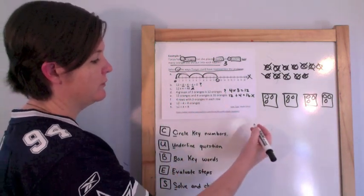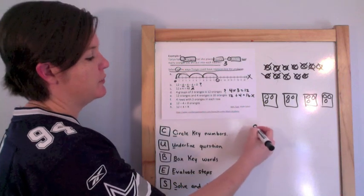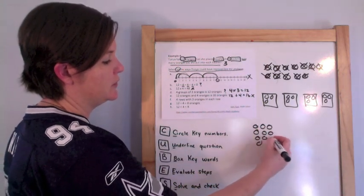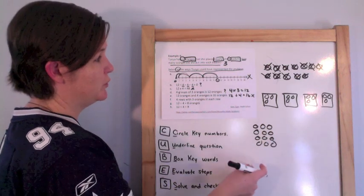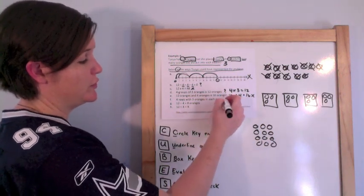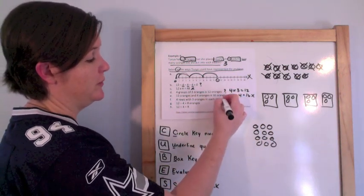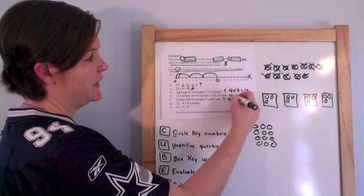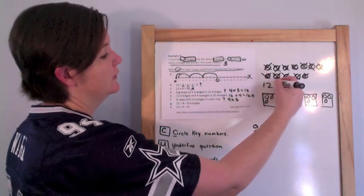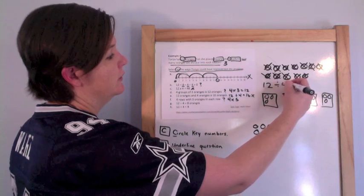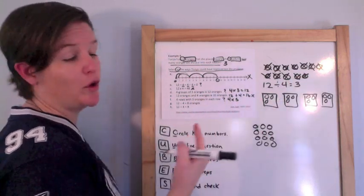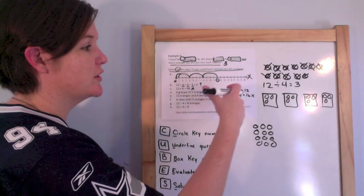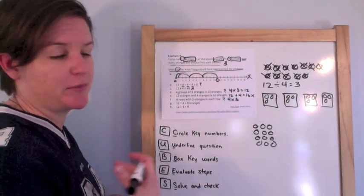Option F: four rows with three oranges in each row — three in each row would be twelve total. That's a good way to represent this problem. Even though I'm dividing, it's still the same fact family, so that works.